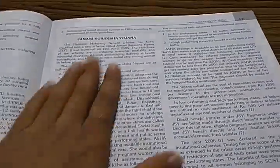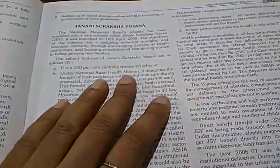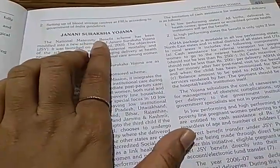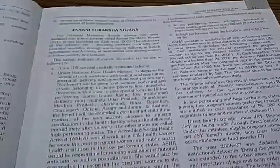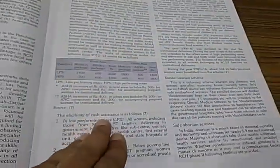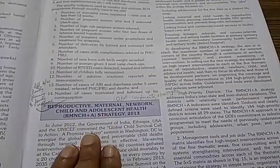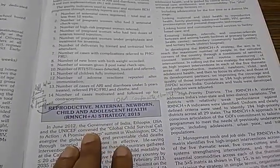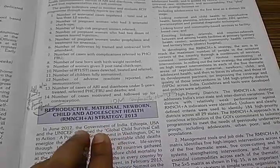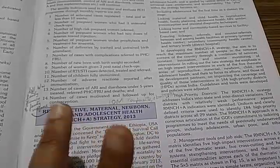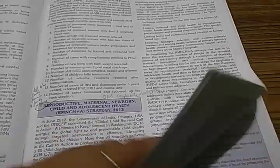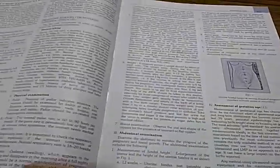We are about half done. Janani Suraksha Yojana — this is now replaced with Janani Shishu something — these schemes become obsolete very soon, before you even buy the textbook. Then Reproductive Maternal Newborn Child and Adolescent Health — RMNCH+A — the adolescent strategy is important. All these national health programs you have to know.